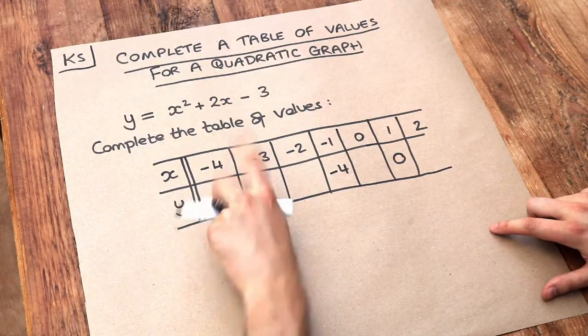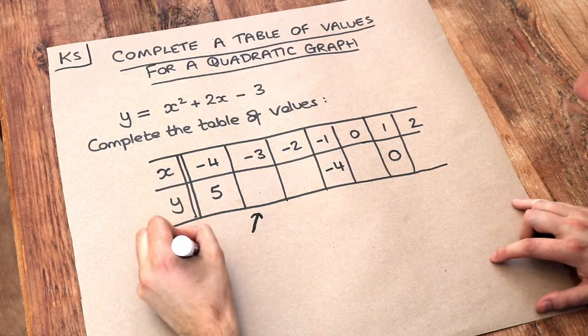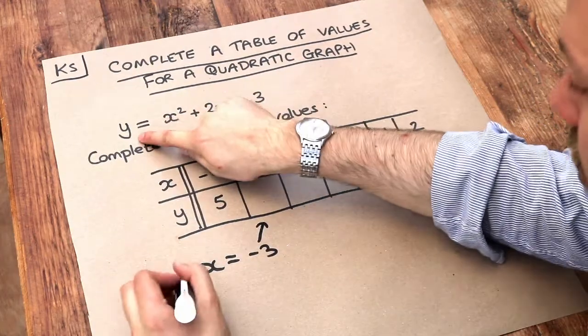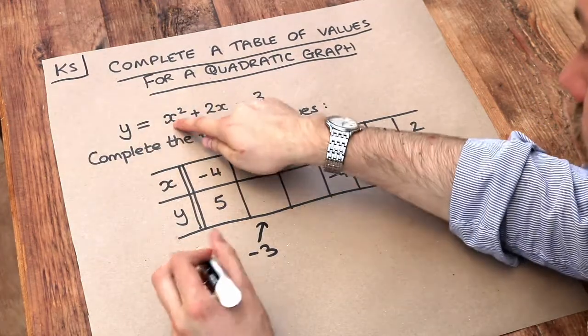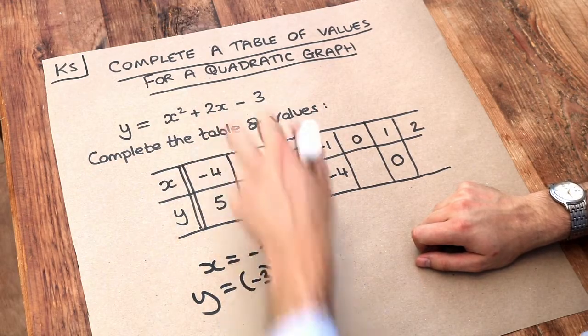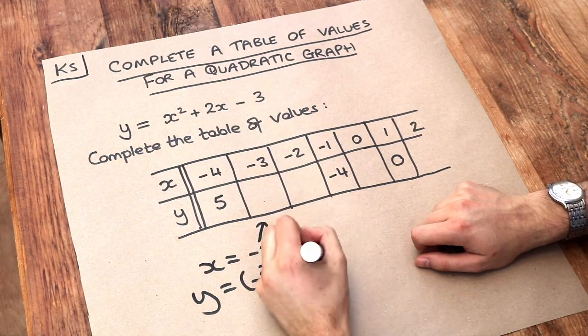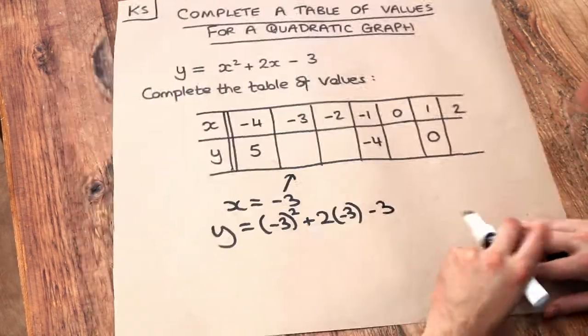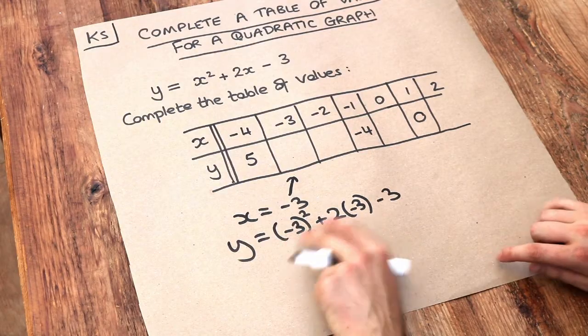Let's start with x as minus 3. If we substitute it into here, we have y equals minus 3 squared plus 2 times minus 3 minus 3. There are a few things to note here. Notice that I've put the minus 3 in brackets.